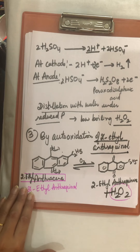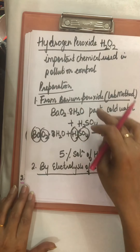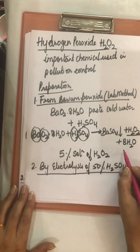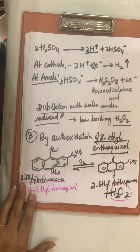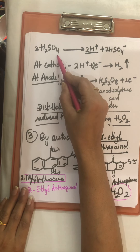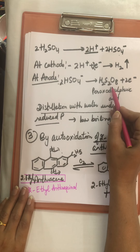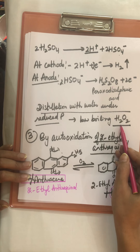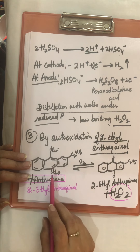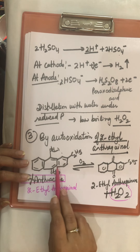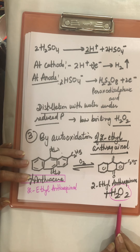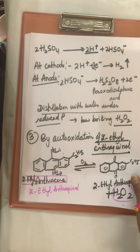To summarize, there are three methods to prepare hydrogen peroxide: first, from barium peroxide by making its paste in cold water and passing sulfuric acid; second, by electrolysis of sulfuric acid to get peroxodisulfuric acid H₂S₂O₈, which is distilled with water under reduced pressure to yield H₂O₂; third, by auto-oxidation of 2-ethyl anthracenol to give H₂O₂ as a by-product.